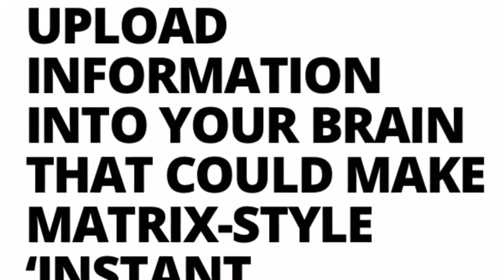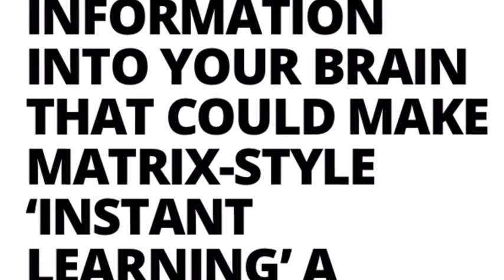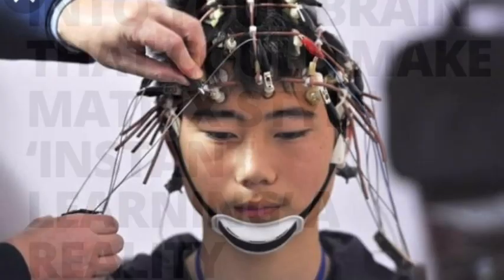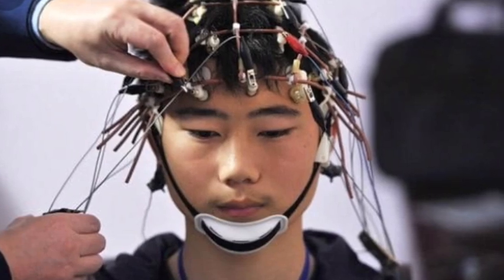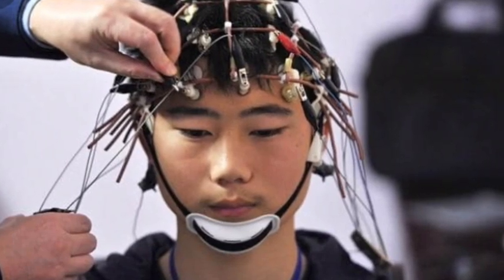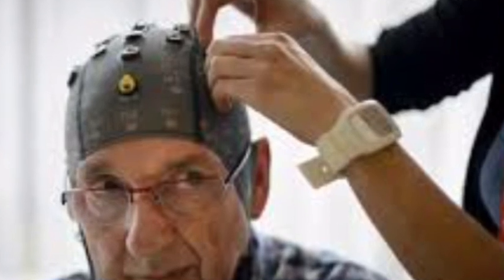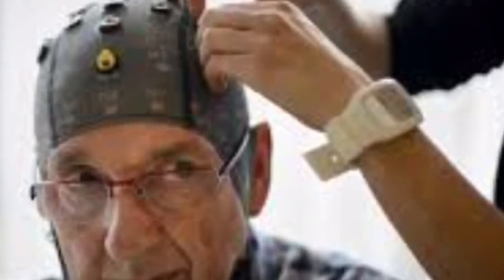Scientists discover how to upload information into your brain that could make Matrix-style instant learning a reality. Researchers claim to have developed a simulator which can feed information directly into a person's brain and teach them new skills in a shorter amount of time, comparing it to life imitating art.